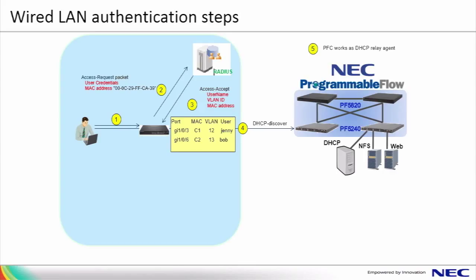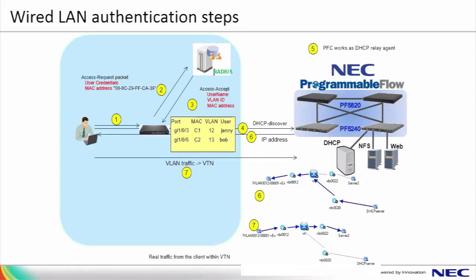Once the relayed unicast packet hits the DHCP server, the DHCP server may then offer an IP address back to the client. To illustrate how the programmable flow controller may assist with debug, we're showing the GUI view of this flow in the bottom right. Lastly, once the user has an IP address, they may then access secure resources that reside in the OpenFlow network. We're showing a flow of the user attempting to access a secure server. In the next slide, we'll show the PFC configuration for DHCP relay.